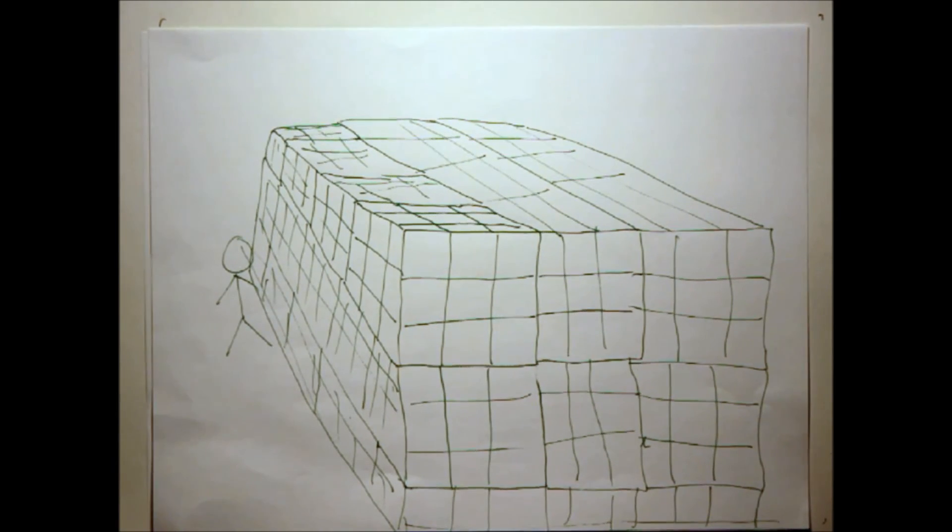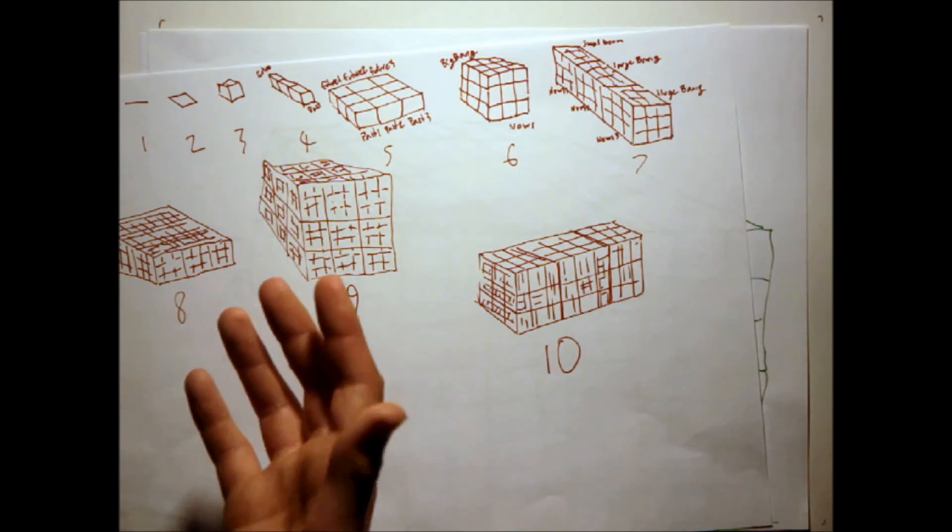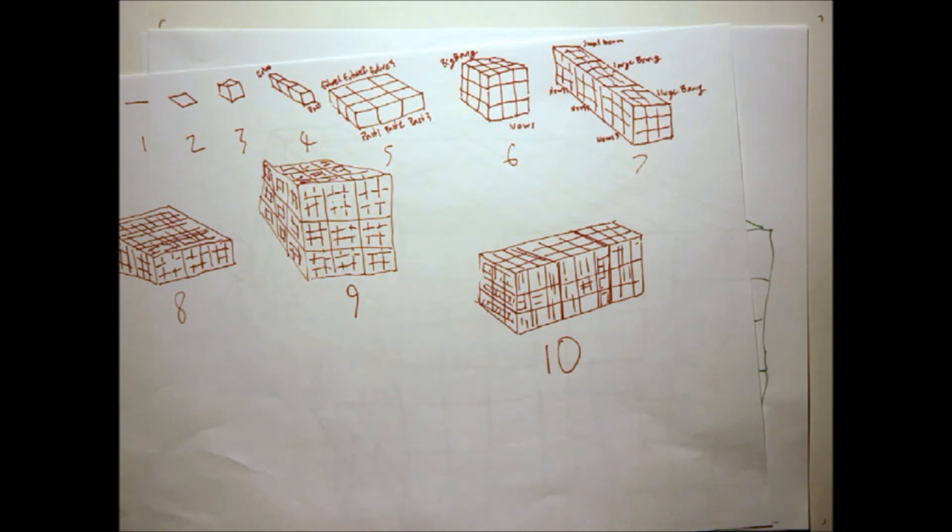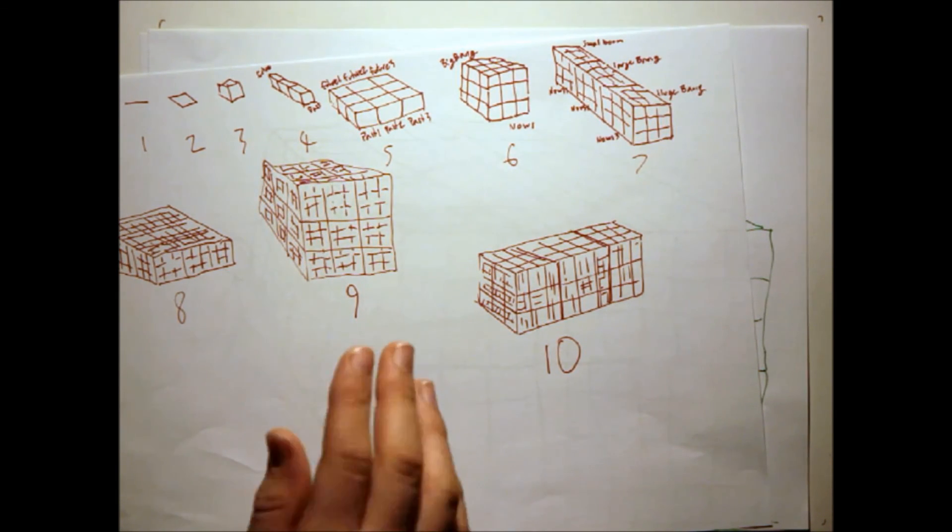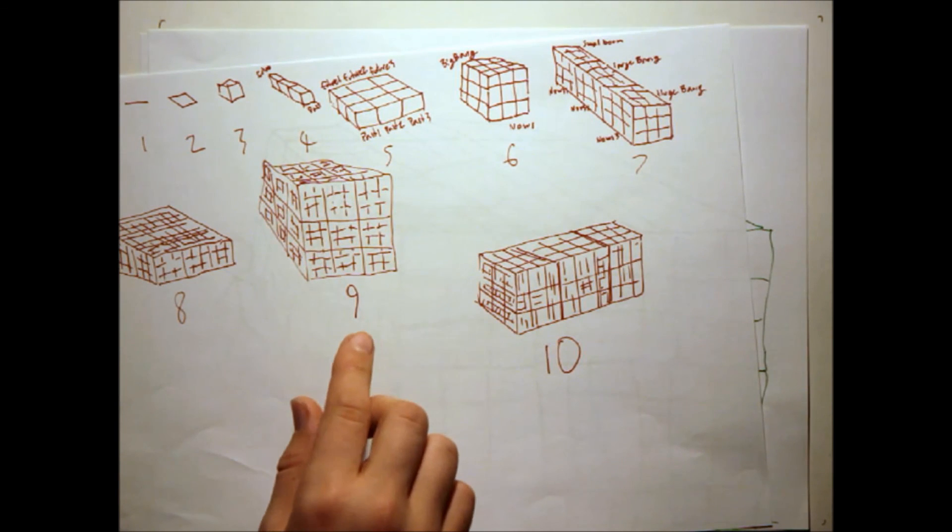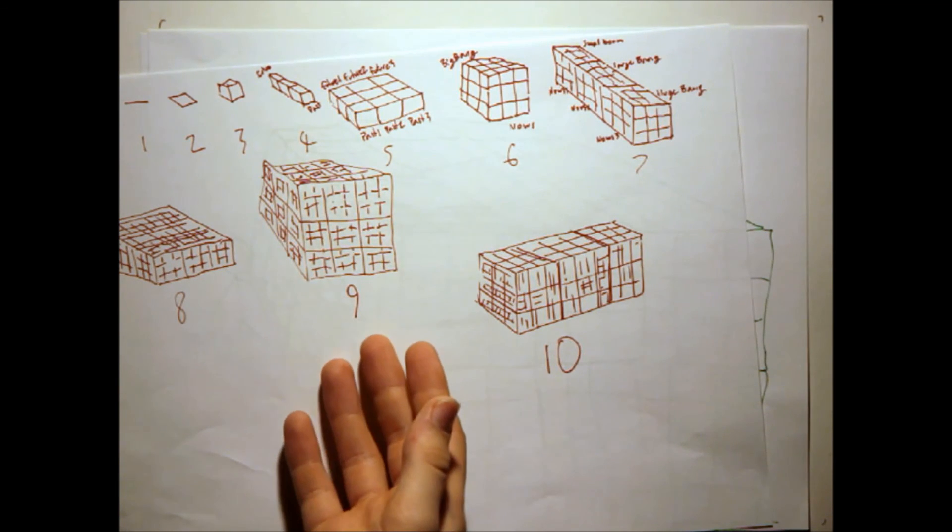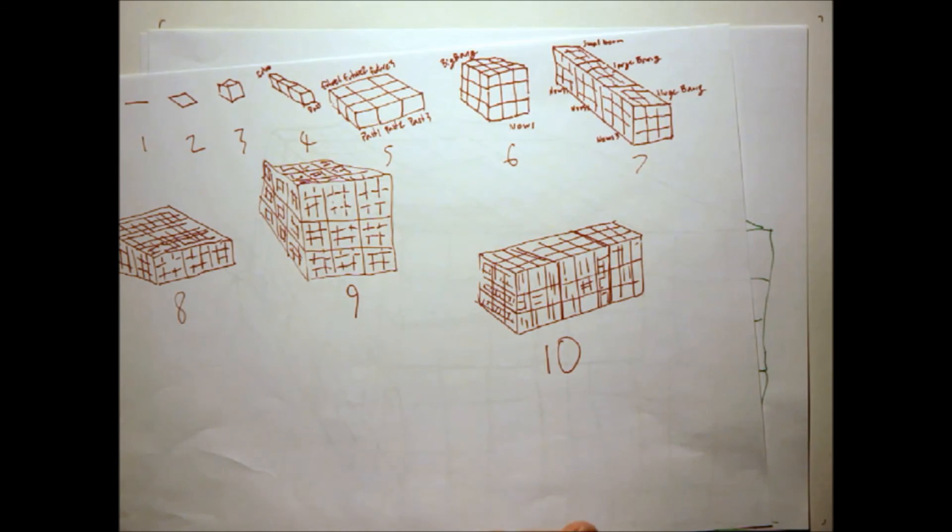The tenth dimension, what could it be? We already have all possible timelines of all possible universes with the same start conditions of all possible universes with different start conditions times infinity, then times infinity a couple more times. So, how could you have more than that? Isn't that all there is? Isn't that all possibilities? Well, the tenth dimension is a whole separate all possibilities.